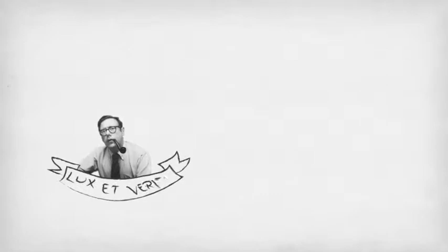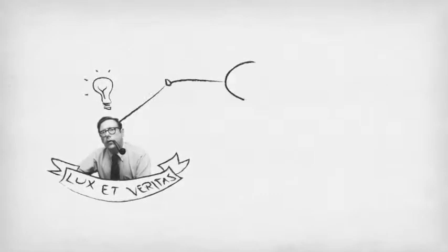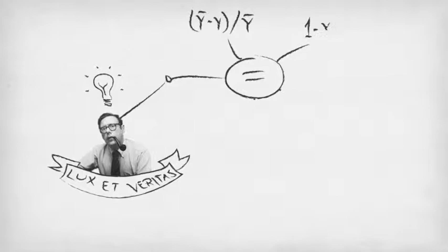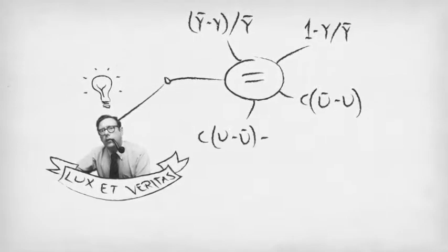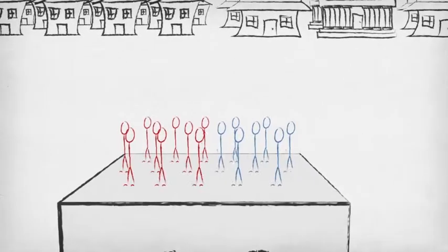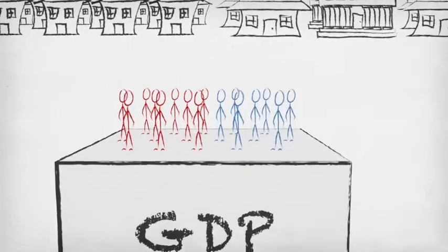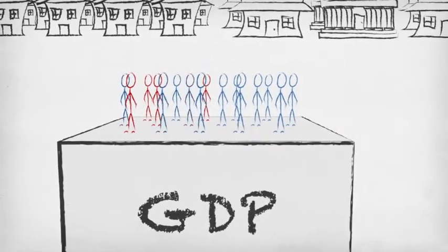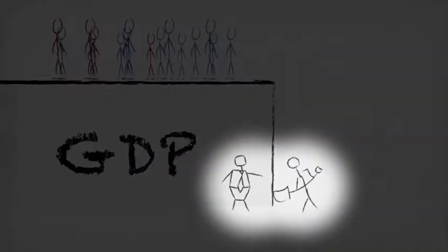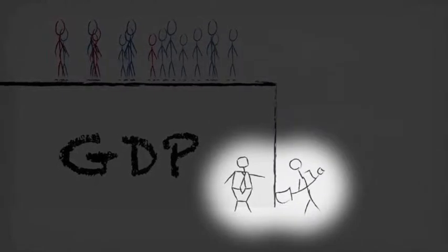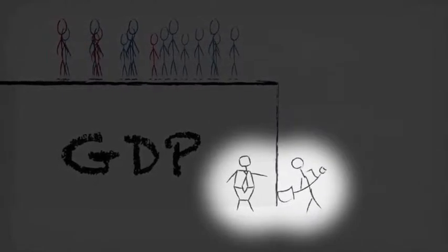Arthur Melvin Okun, an economist at Yale University, made a statistical connection between changes in unemployment rates and economic growth. To many people, that also meant that higher growth would mean less unemployment. And this led governments and aid agencies to focus on increasing GDP as a way to get people to work.